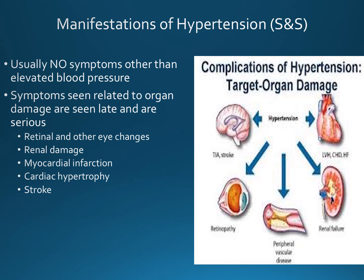Manifestations of hypertension — signs and symptoms — are usually not seen until damage has occurred to organs. The organs most negatively affected are the heart, causing congestive heart failure or acute MI; the brain, resulting in confusion, headache, stroke, or memory loss; the kidneys — hypertension causes 25,000 new cases of kidney failure in the U.S. every year; the eyes, causing retinopathy; and the reproductive system, causing erectile dysfunction. Symptoms are usually severe because they appear as late-stage signs.